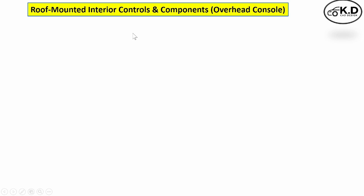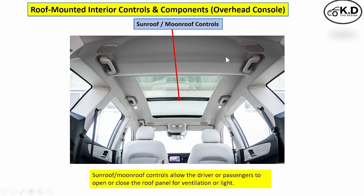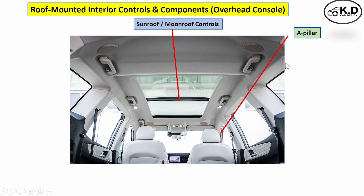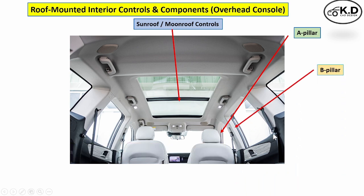The next section covers the roof headliner and overhead parts. The first part is the sunroof or moonroof controls, which allow the driver or passenger to open and close the roof panels. The next is the A-pillar, which covers the structural component and provides space for sensors, airbags, and wire harness.